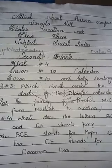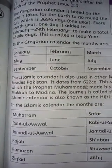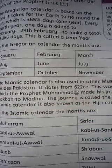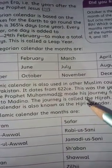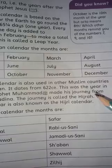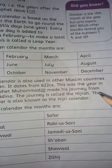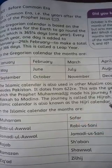Question number 3 is related to our Islamic calendar. First of all, the book is on page number 57. The second paragraph is our reading. The Islamic calendar is also used in other Muslim countries besides Pakistan. It dates from 622 CE. This was the year in which the Prophet Muhammad ﷺ made his journey from Makkah to Medina. The journey is called the Hijrah. The Islamic calendar is also known as the Hijrah calendar.